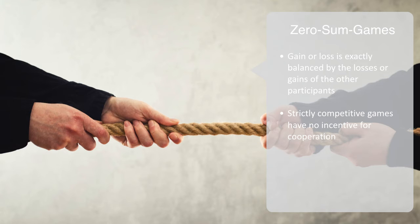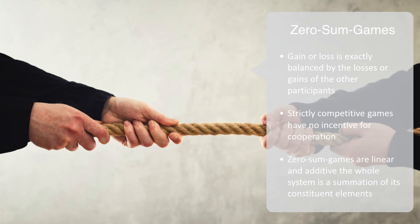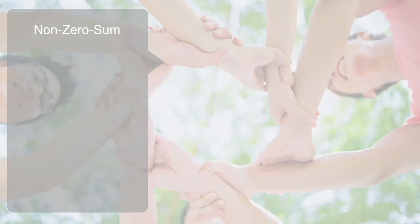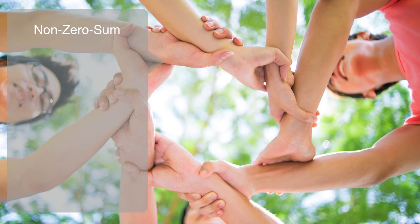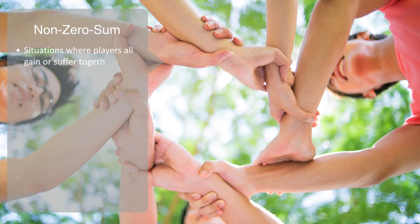Zero-sum games are linear and additive. The whole system is simply a summation of its constituent elements, thus they are essentially simple or non-complex. Complexity arises when we have a dynamic between competition and cooperation. Situations where participants are interdependent, being able to all gain or suffer together, are referred to as non-zero-sum.